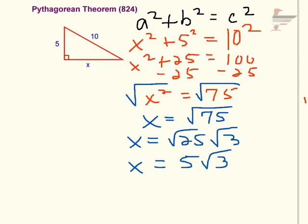Or if you're really cool, you can say x equals 5 root 3. That is the answer to the missing leg in this Pythagorean Theorem problem.